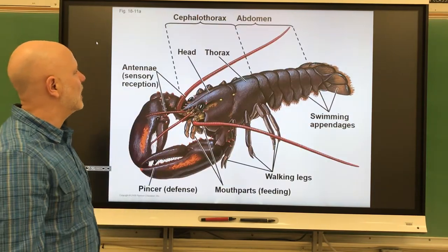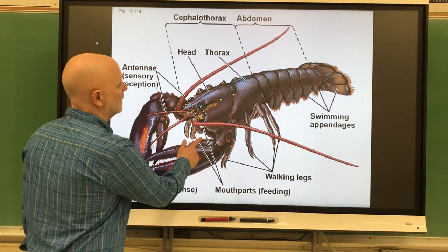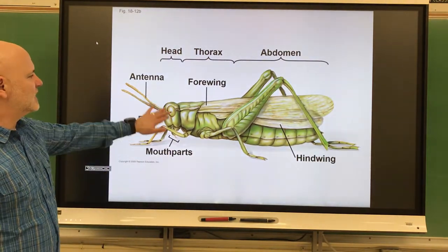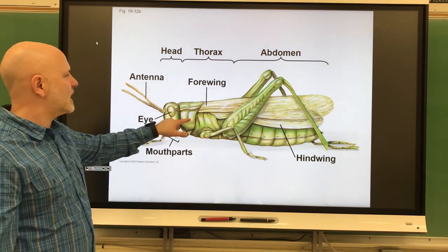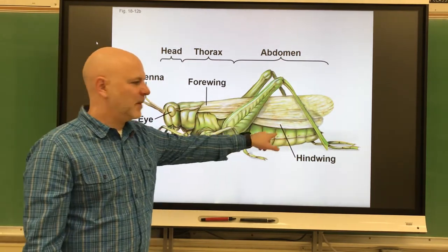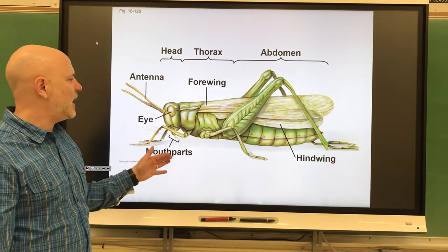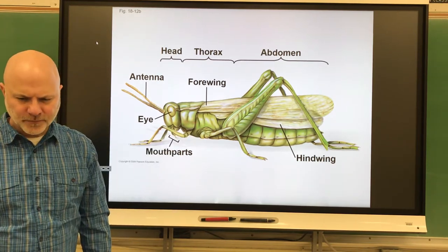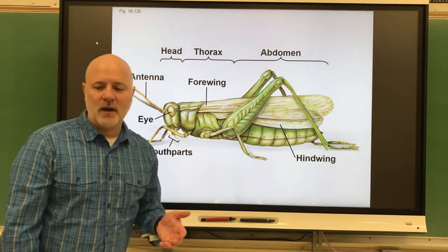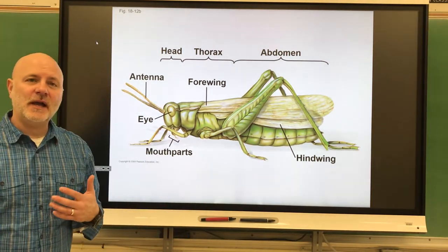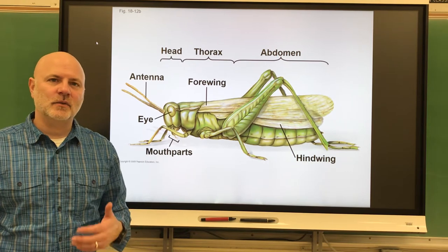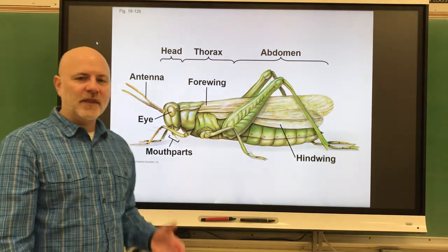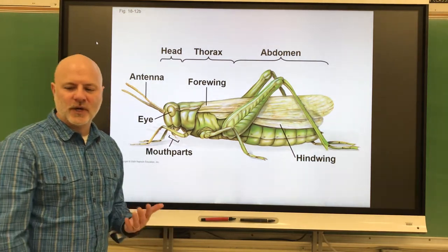Here's showing a lobster and an insect — a grasshopper. They have a distinct head, a distinct thorax area, and an abdomen as well. They have jointed paired appendages that come off of the thorax. These guys are protostomes and have a chitinous exoskeleton, which is a hard protein-carbohydrate complex. They can be freshwater, marine, terrestrial, and parasitic.